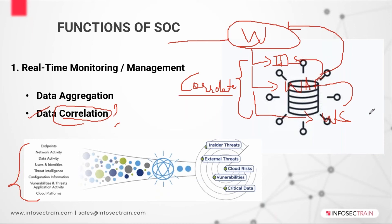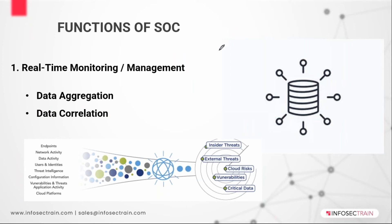In this phase, two or more event logs are combined to learn the intelligence of an occurred suspicious event, so that it can help us understand the whole incident scenario. It's not a direct process — there are certain steps which we do in order to correlate. Step one is normalization.